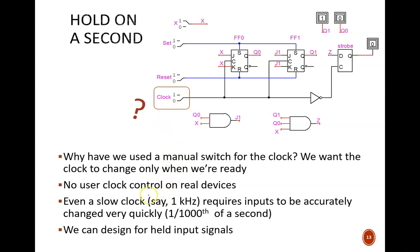In most computer applications, there will be an actual system clock serving as this signal, which is oscillating up and down, regularly and quickly. Let's assume a relatively slow clock of 1 kilohertz. That would still require the input signal to update accurately in 1 one-thousandth of a second.